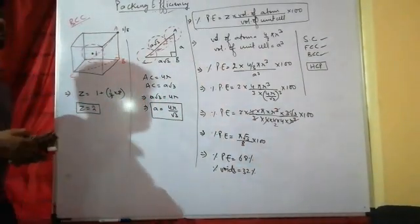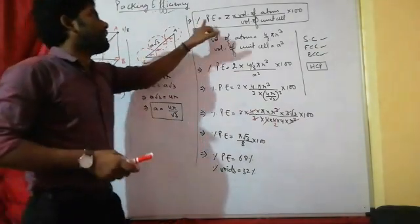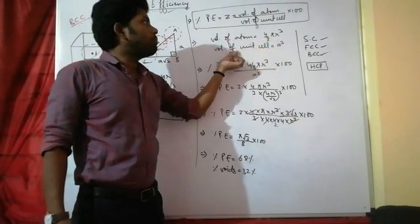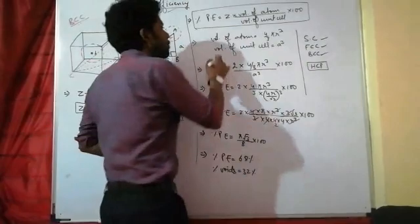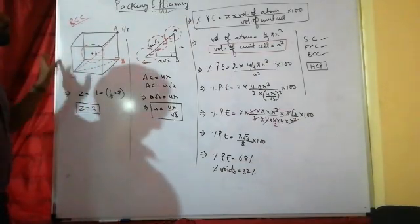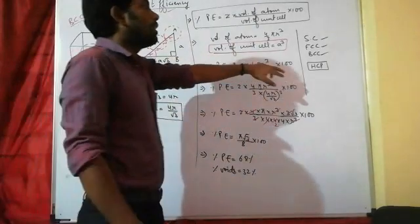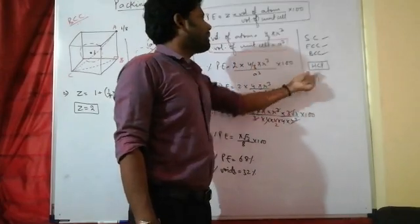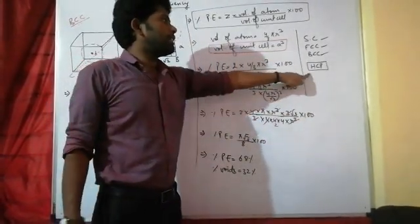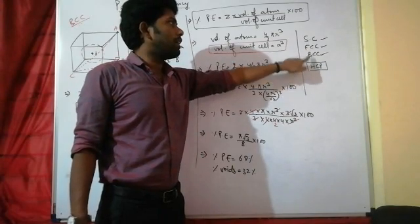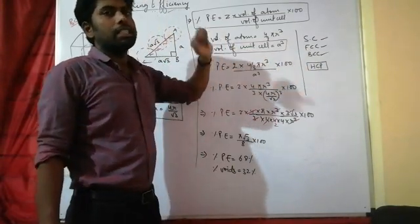One more is left — HCP unit cells. The formula is the same: percentage packing efficiency = Z × volume of atom / volume of unit cell × 100. The volume of atom is the same, (4/3)πR³, but the volume of the unit cell will change for HCP because the unit cell is hexagonal, not cubic. The packing efficiency of FCC and HCP is the same — 74% packing and 26% voids.